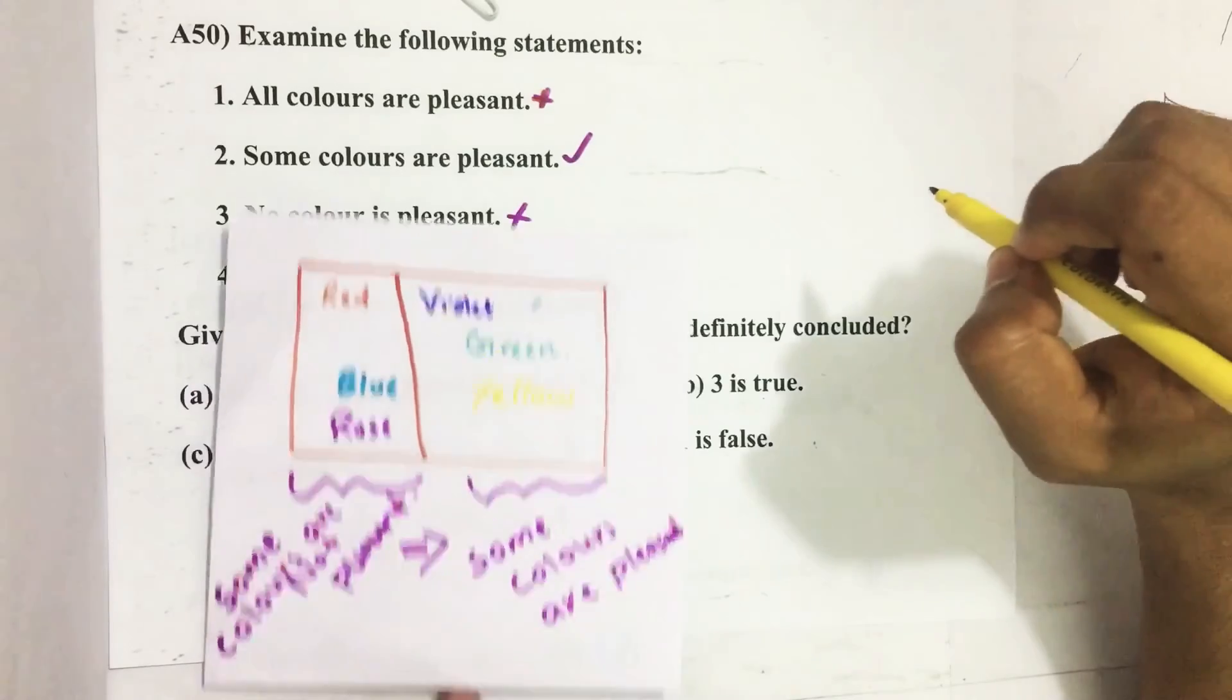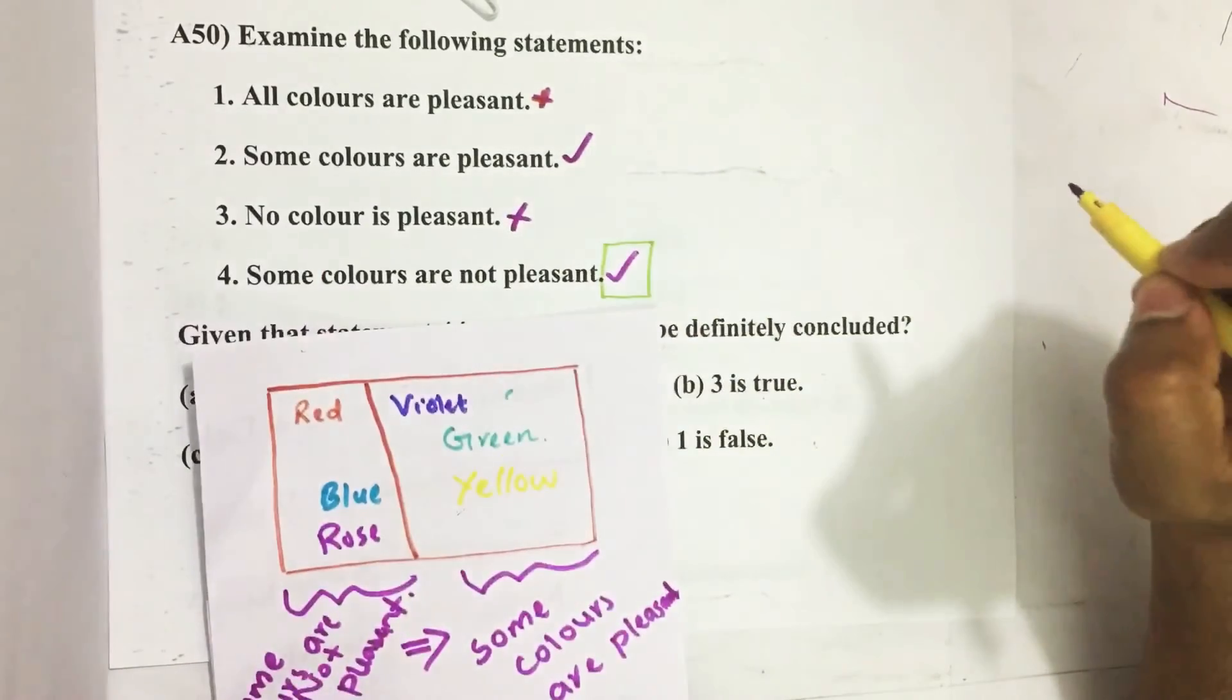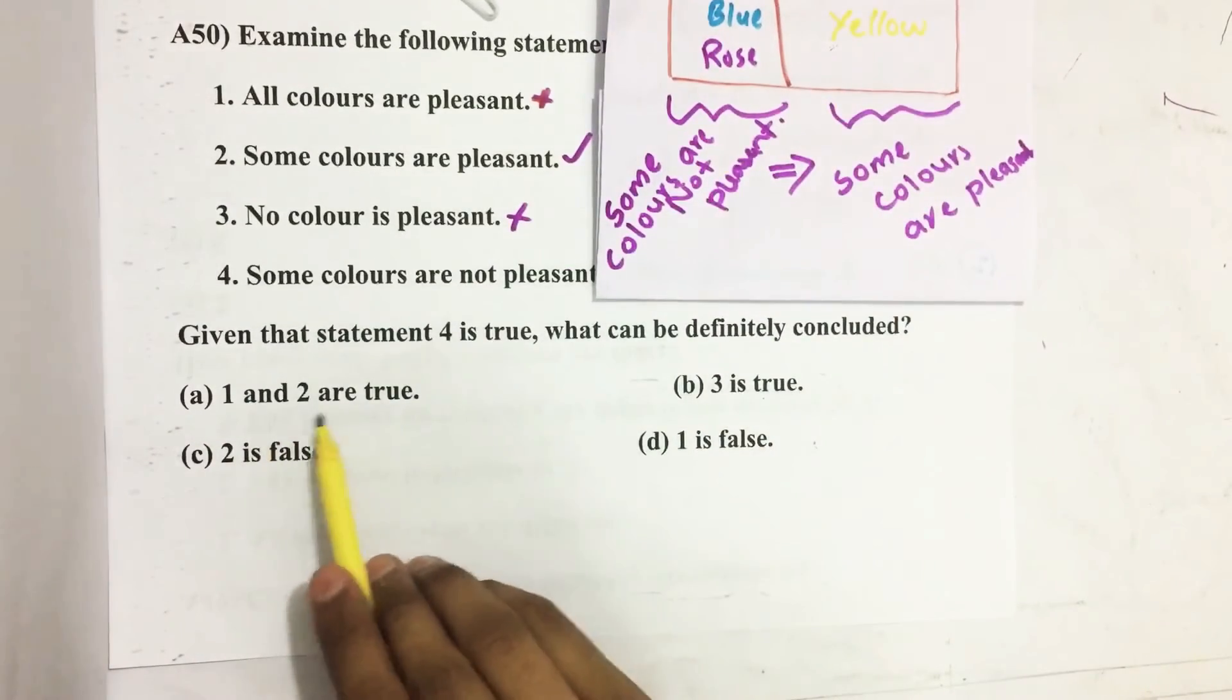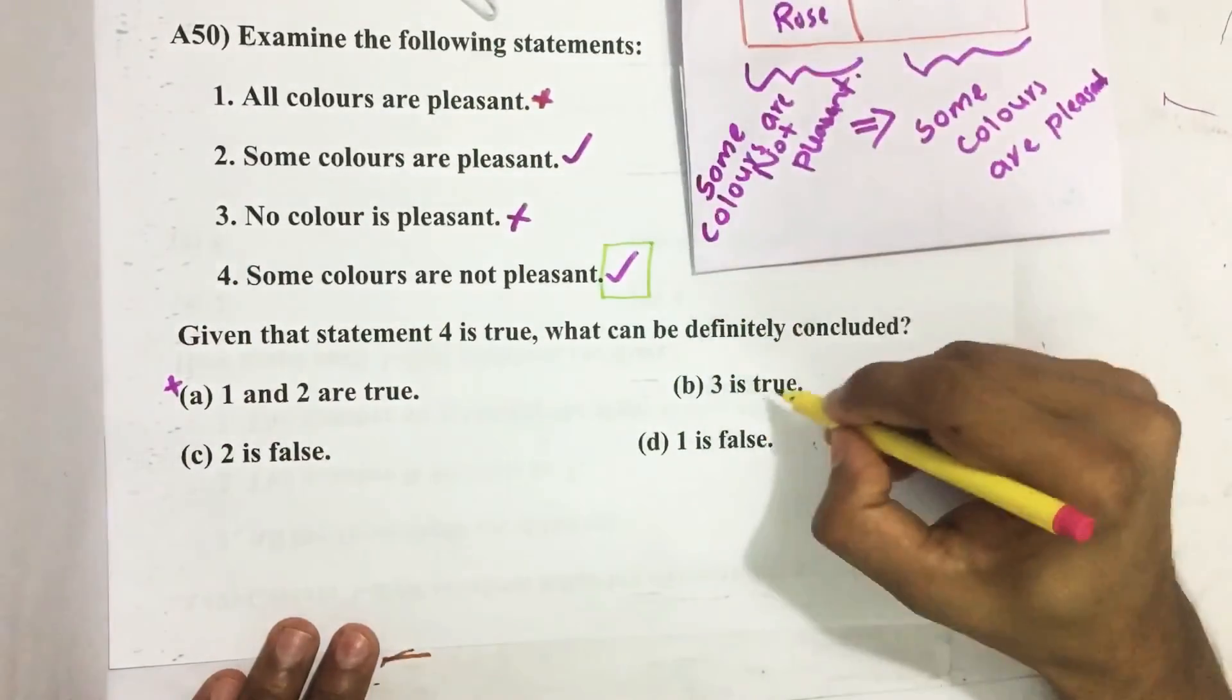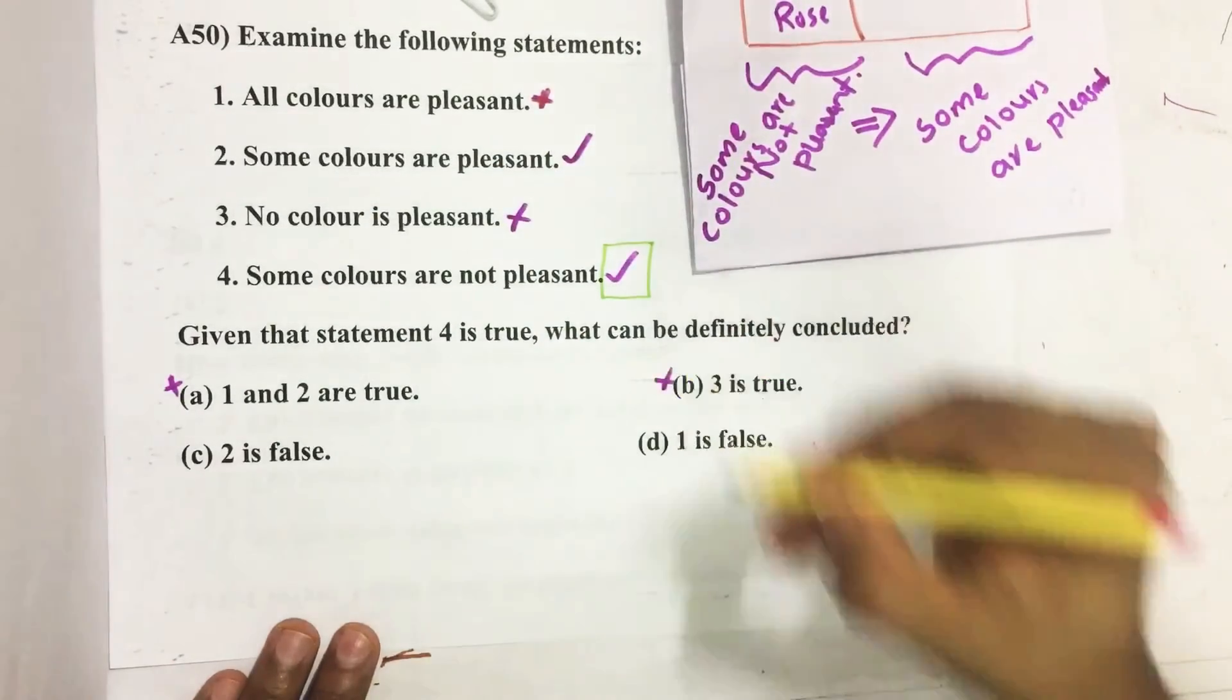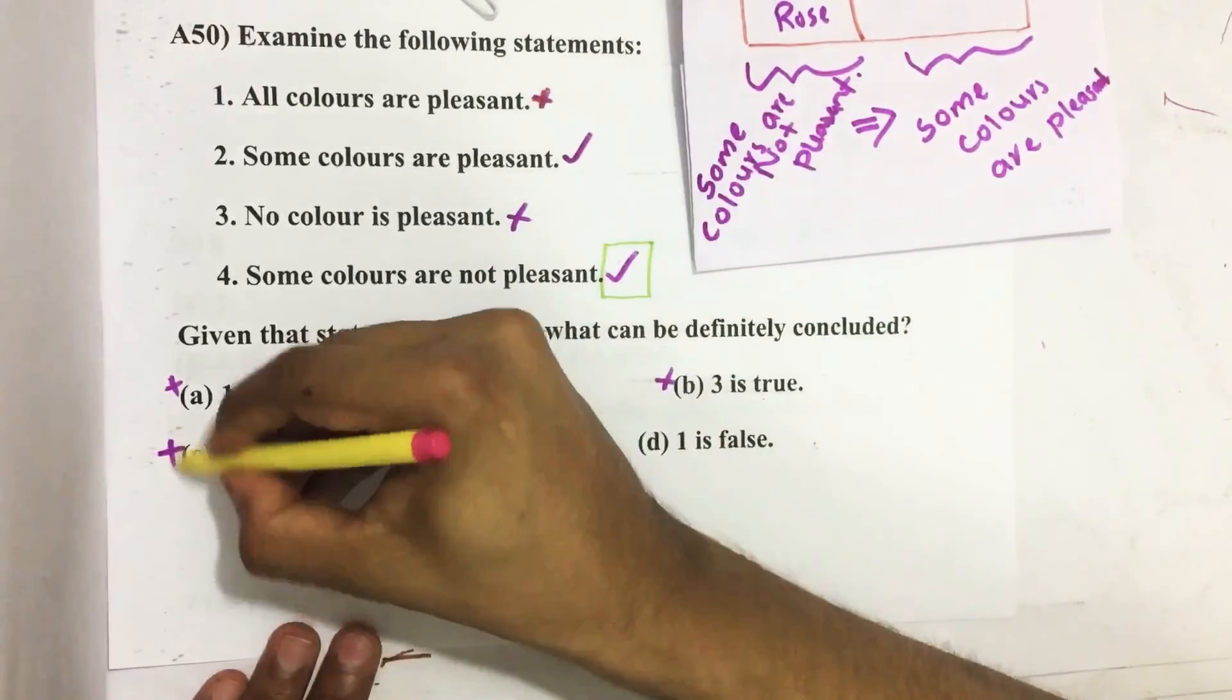Now let's see the options. (a) 1 and 2 are true? No, only 2 is true, so this is wrong. (b) 3 is true? No, 3 is false. (c) 2 is false? No, 2 is true, so this is also wrong.